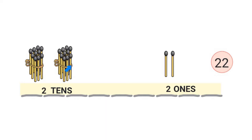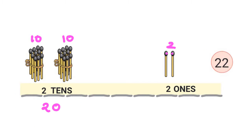So now we know that two tens are 20 matchsticks. Plus we have this extra matchstick, so 20 and 1 is 21. I have another bundle of matchsticks — this bundle is 10, and this bundle is also 10. So 2 tens make 20, plus 1, 2 extra matchsticks. So 20 and 2 is 22. I have 22 matchsticks in all.